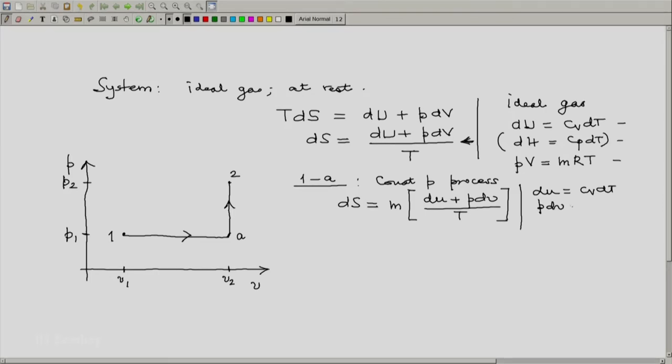So PdV will be d of PV and since PV equals RT and R is a constant, this is going to be R into dT. Consequently, our numerator is going to be Cv plus R into dT which is Cp dT. So this will be M into Cp dT by T.